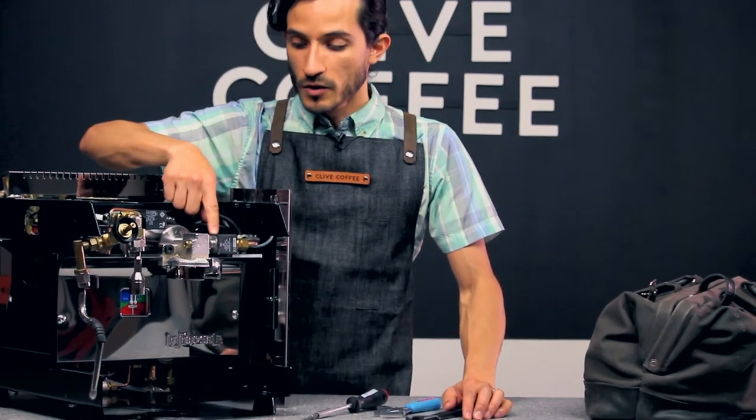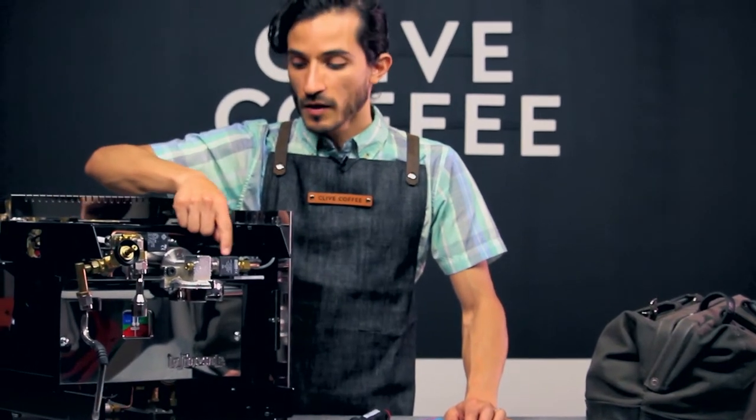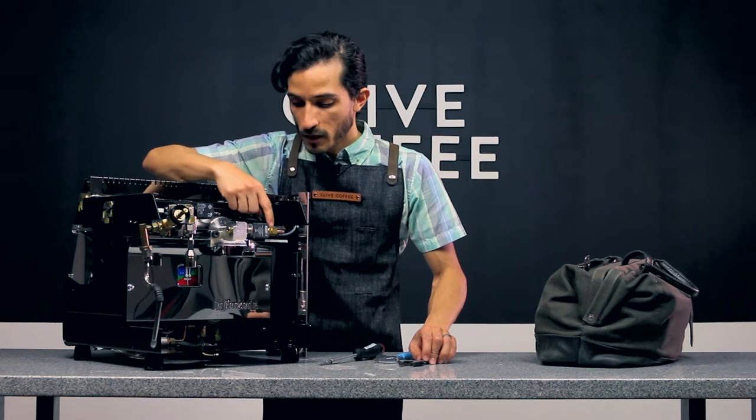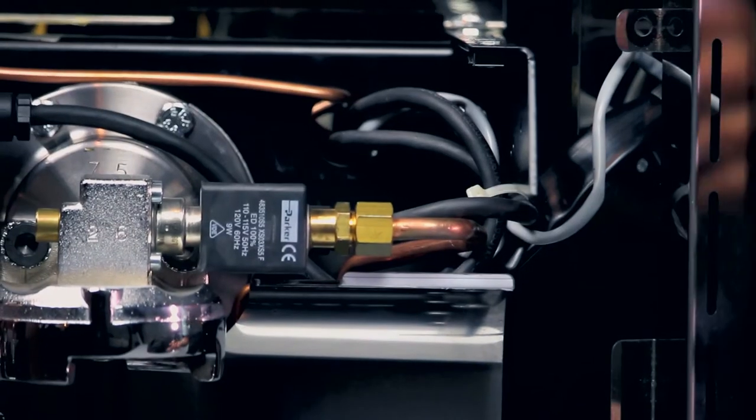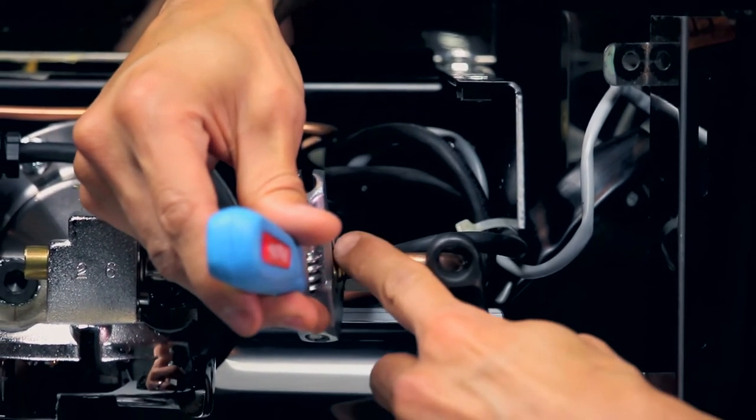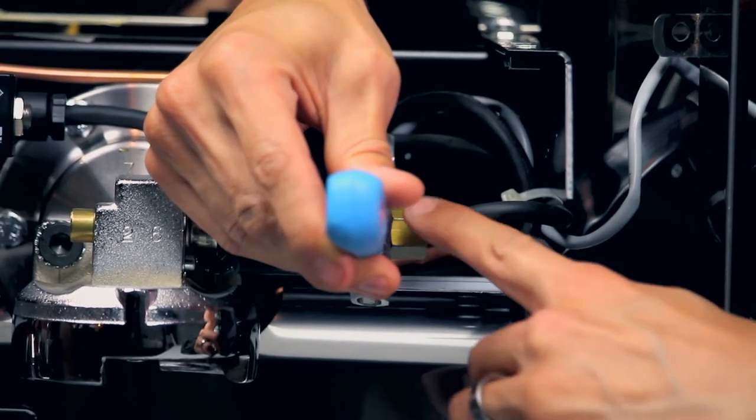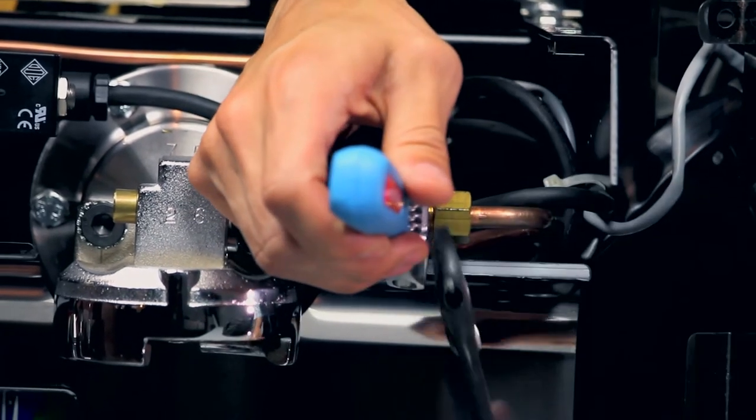Your group head solenoid is located right here. It's attached to the top of the group head. We're going to start by removing the copper tubing that is attached on this side of it. Using your two adjustable wrenches, you're going to use the inside wrench to hold that inside nut in place and then we're going to loosen the outside just like that.